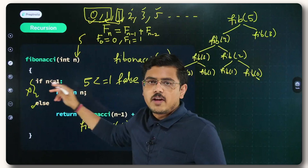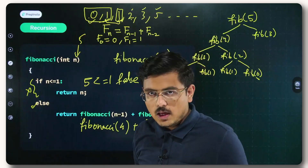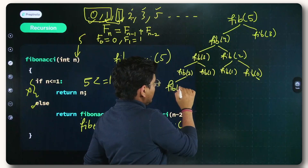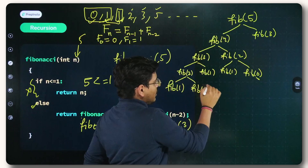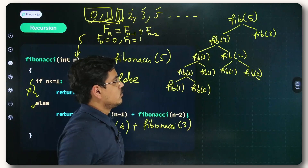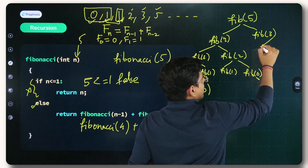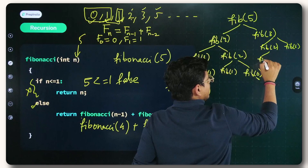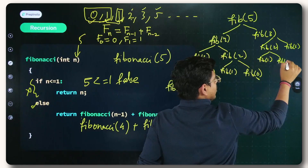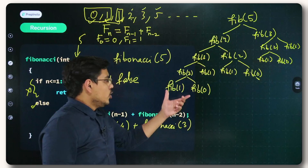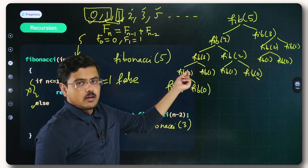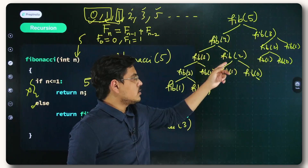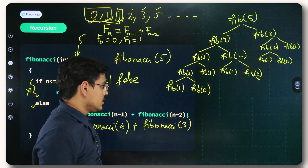Fib(2) gets partitioned into Fib(1) and Fib(0). You get the result of those two and return it for Fib(2). Similarly up the tree — you get the result of each pair and return it to the caller above. Each node computes its result using the two children below it.